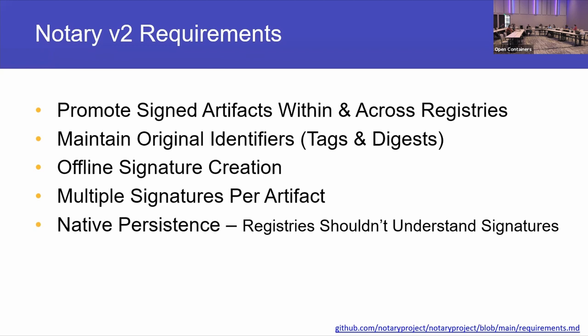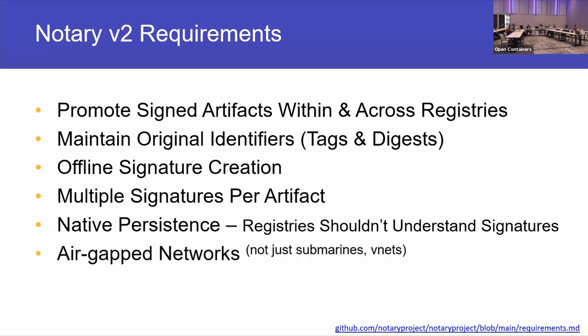We also use the term 'native persistence' — we didn't want to make the registry know about signatures. From the artifacts approach, if we keep things generalized there are probably other things that would be interesting to store in a registry. We also needed to support air-gap networks, and air-gap networks are not just submarines and oil platforms — pretty much every customer in public clouds wants their private environment. We want to make sure signatures are not somewhere else; they're with the content.